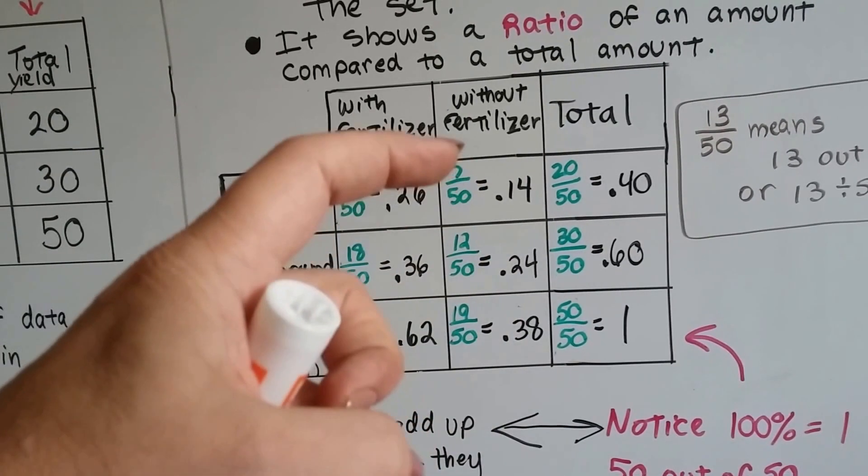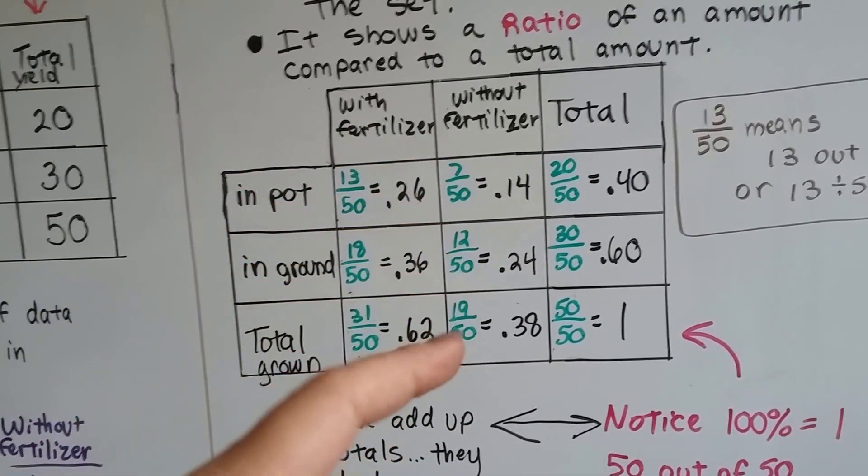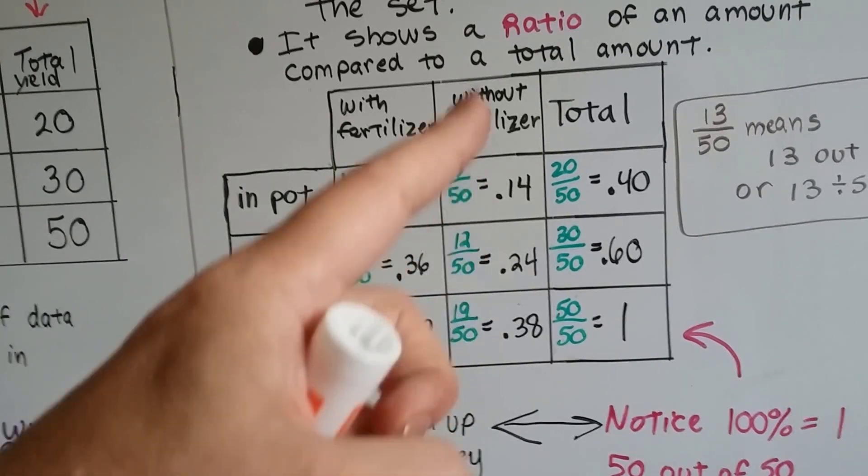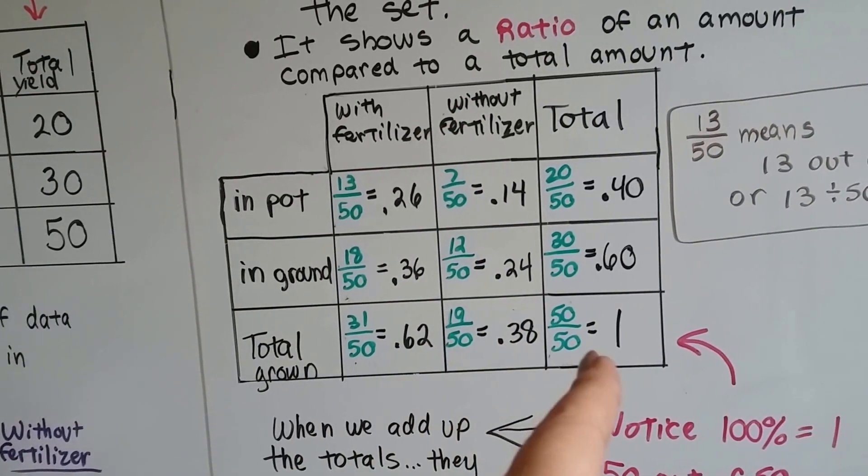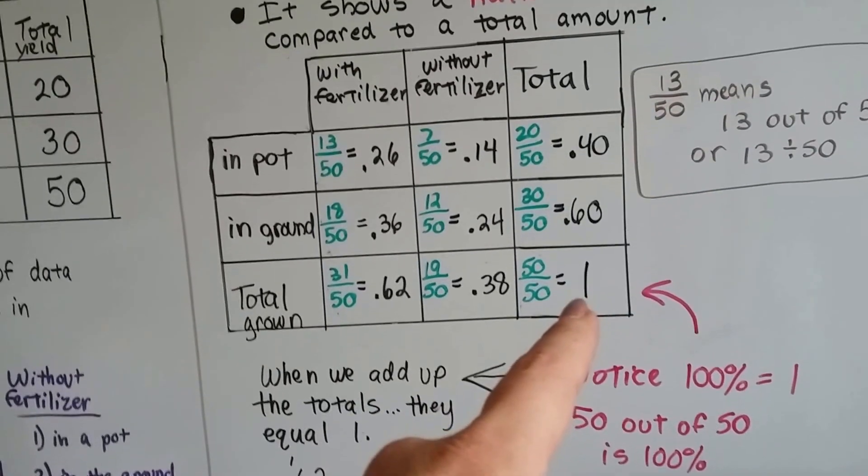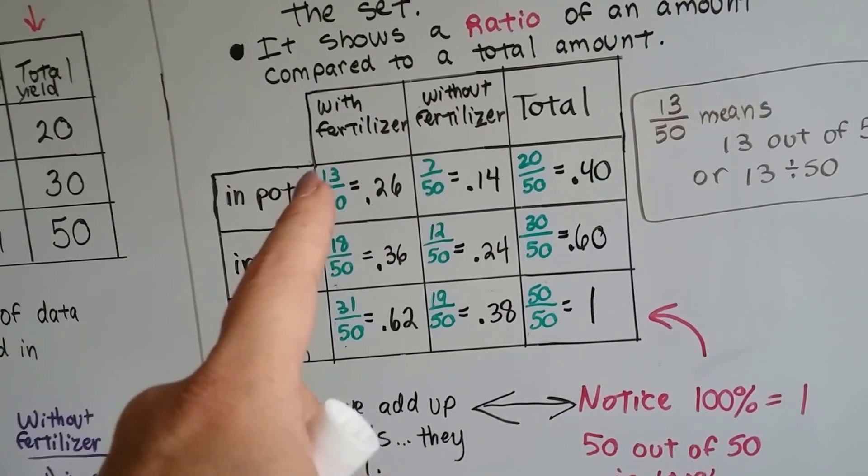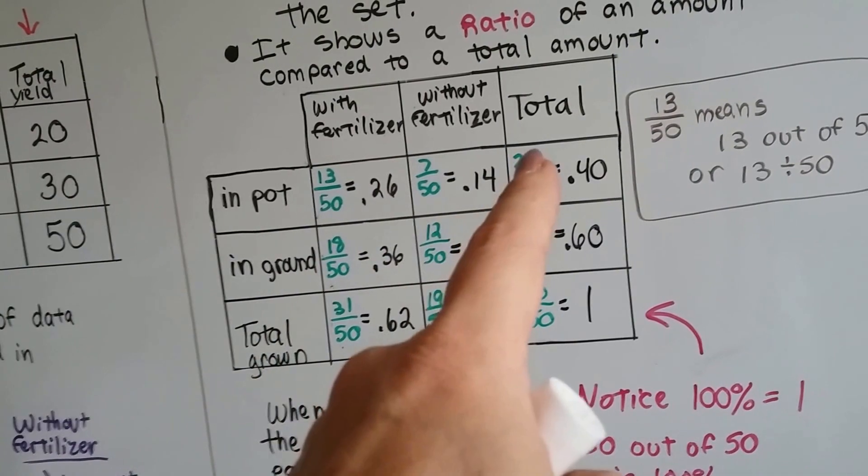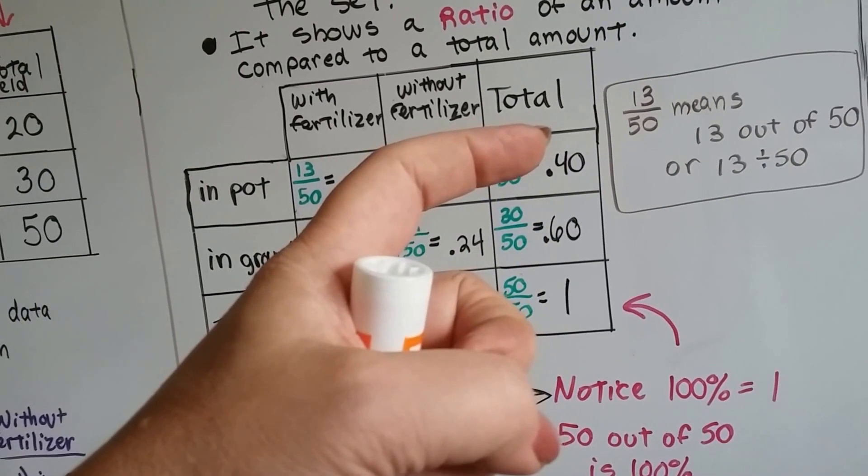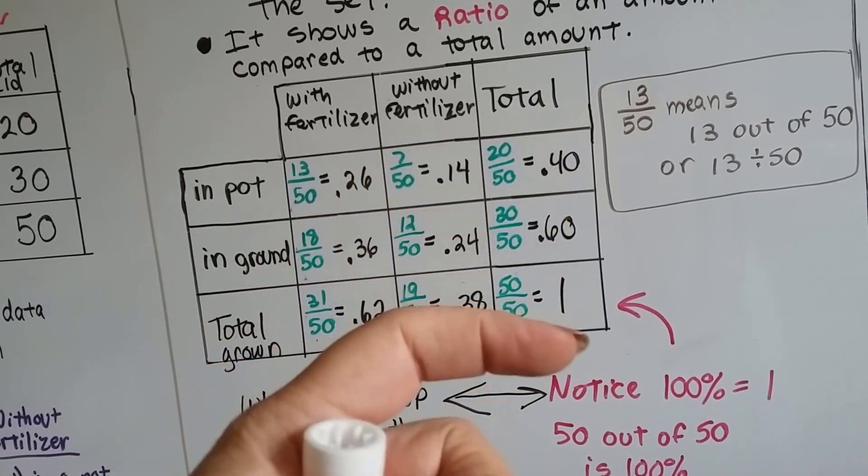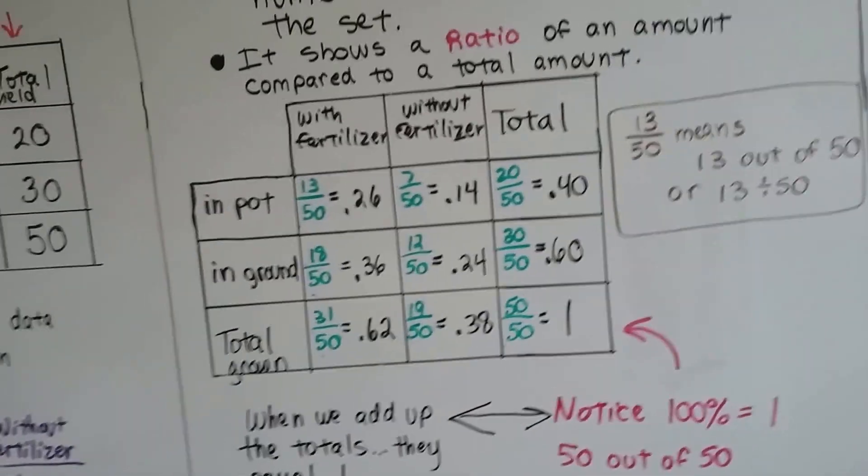We totaled the 7 and 12 and get 19 out of 50. So that's the total that were grown without fertilizer. They equal the 1, like we figured with our math. And this 13 and 7 is 20 out of 50 and 18 and 12 is 30 out of 50. 40% and 60% equals 100%. See how we did that?